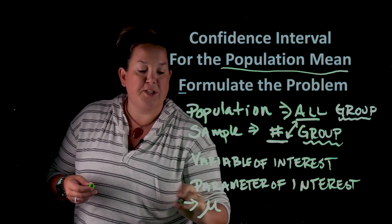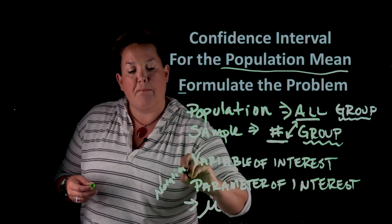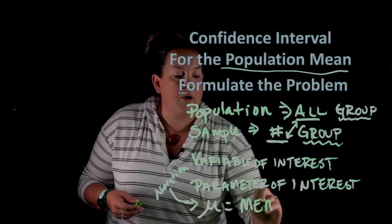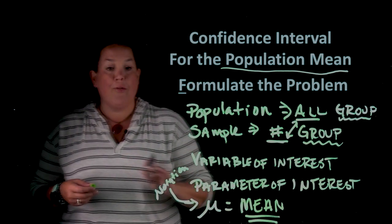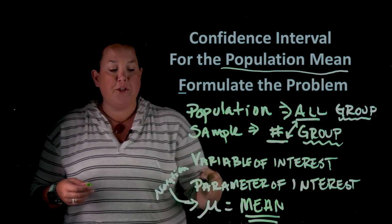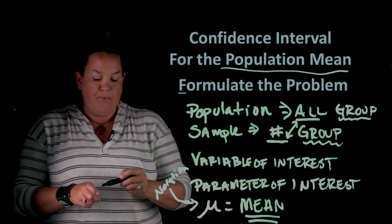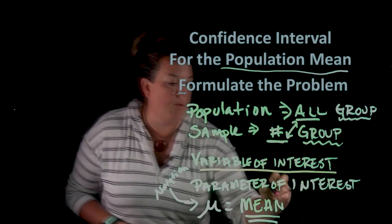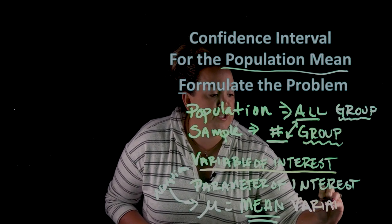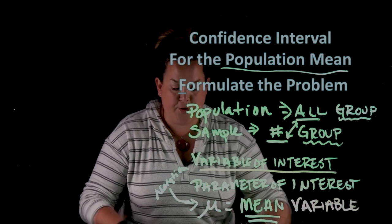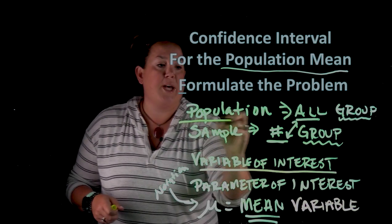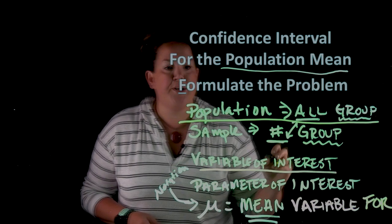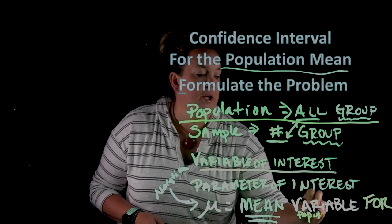Notation just means the symbol we use to represent the parameter. It's always going to start with mu equals mean — that will never change because we're talking about a population mean. Then after that you're going to say 'the mean of' and it'll be whatever that variable was. So you'll restate the variable, and then at the very end you will state what your population is: the variable 'for' and then you'll restate the population you stated above.